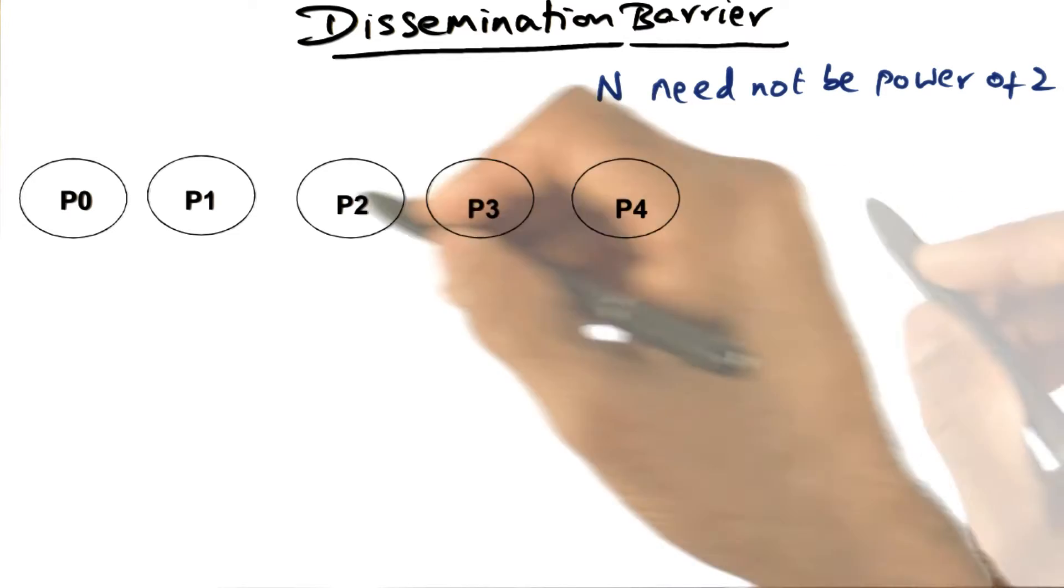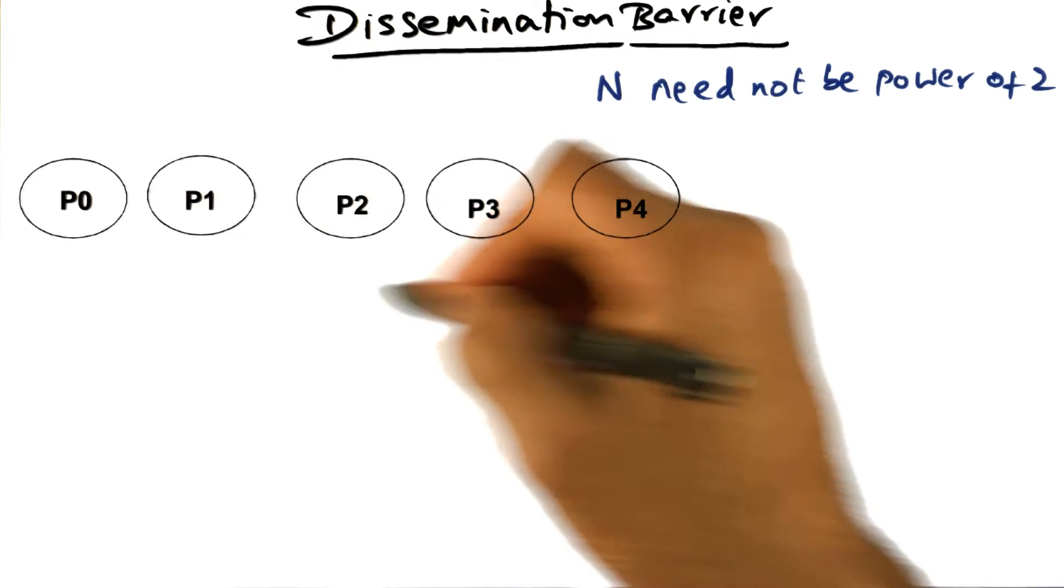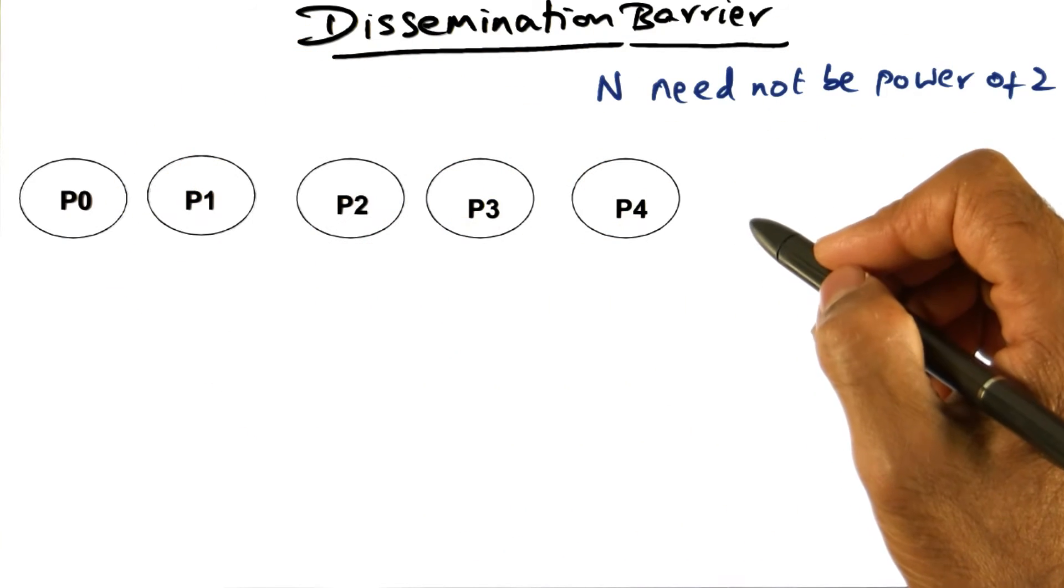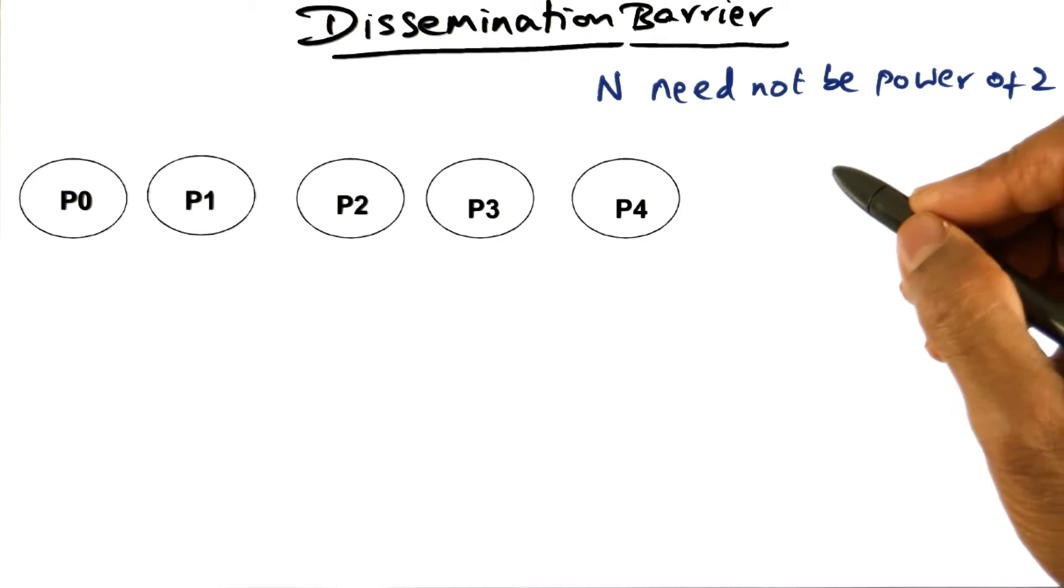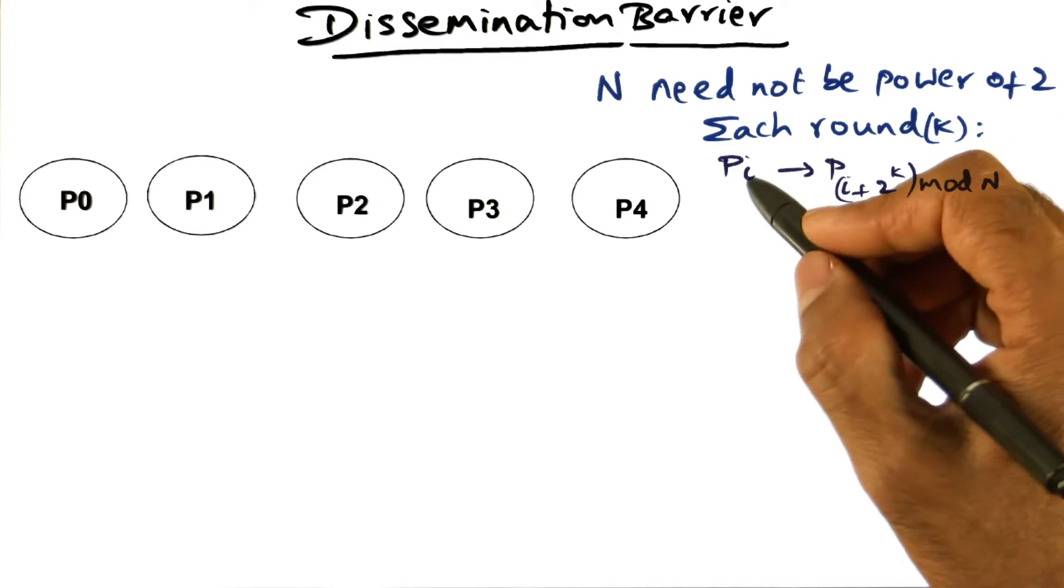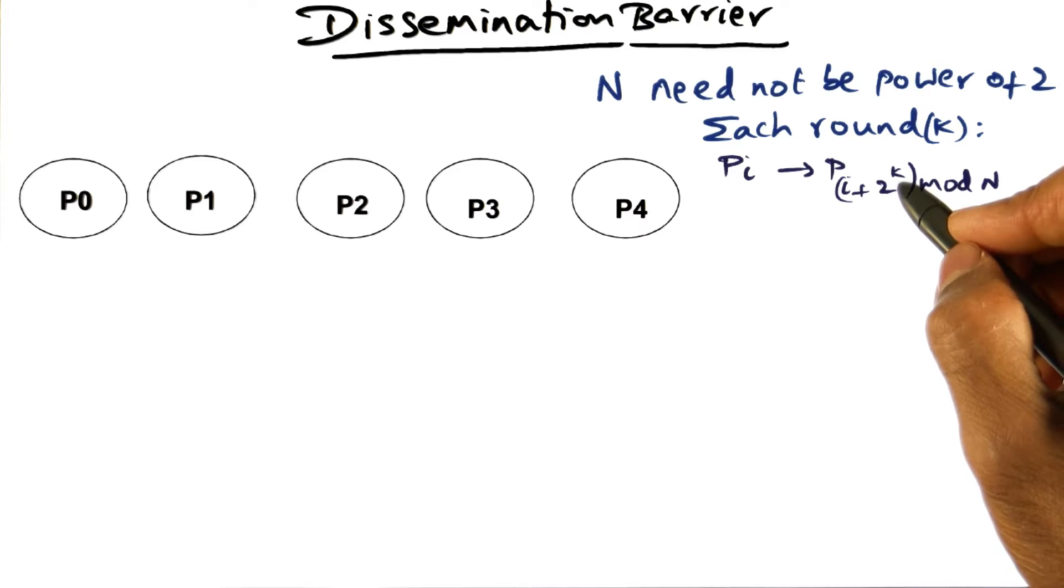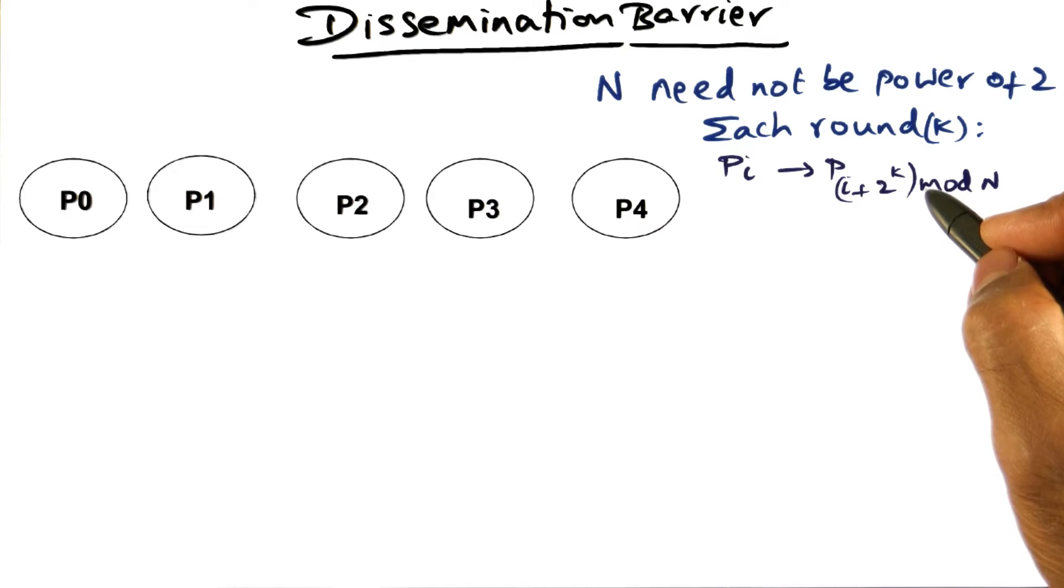There's going to be information diffusion that's going to happen among these processes in several different rounds. In each round, a processor is going to send a message to another ordained processor. The particular processor that it's going to choose to send to is dependent on the round that you're in.